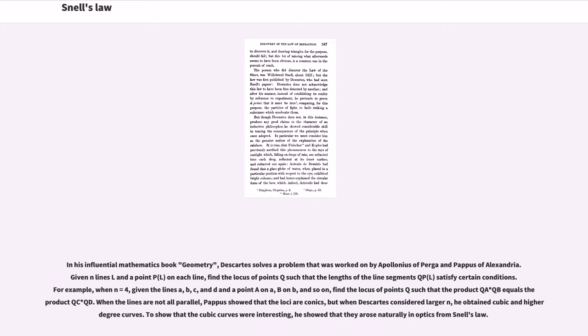In his influential mathematics book Geometry, Descartes solves a problem that was worked on by Apollonius of Perga and Pappus of Alexandria. Given N lines L and a point P on each line, find the locus of points Q such that the lengths of the line segments QP satisfy certain conditions. For example, when N equals 4, given the lines A, B, C, and D and a point A on A, B on B, and so on, find the locus of points Q such that the product QA·QB equals the product QC·QD. When the lines are not all parallel, Pappus showed that the loci are conics, but when Descartes considered larger N, he obtained cubic and higher-degree curves. To show that the cubic curves were interesting, he showed that they arose naturally in optics from Snell's law.